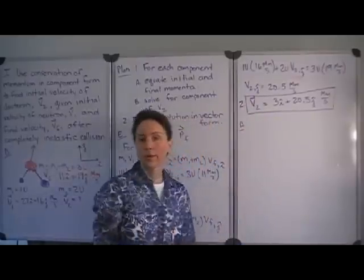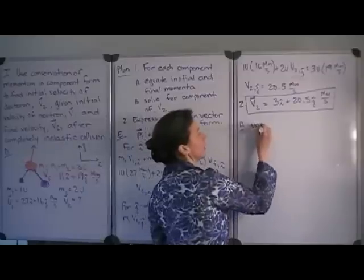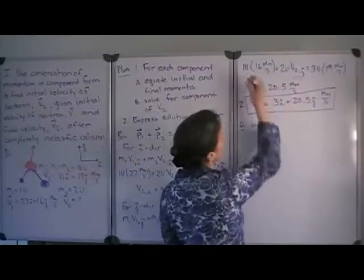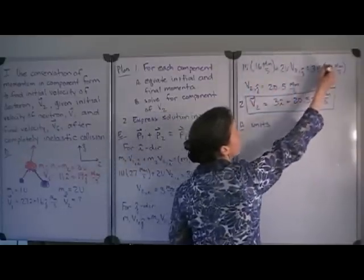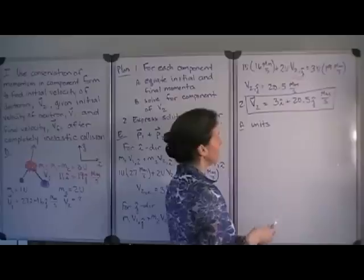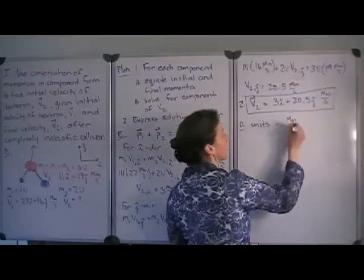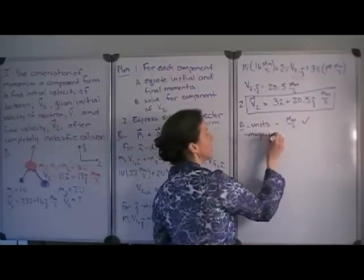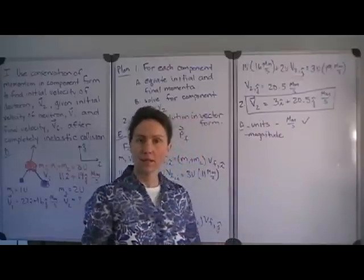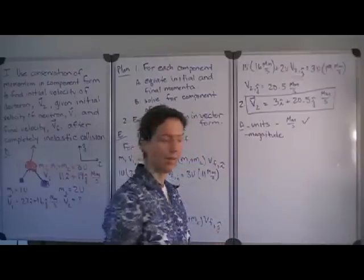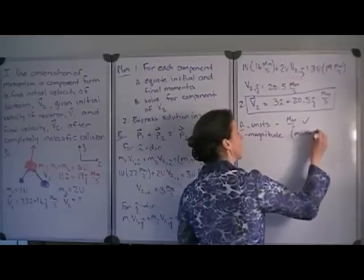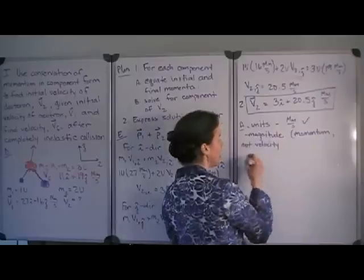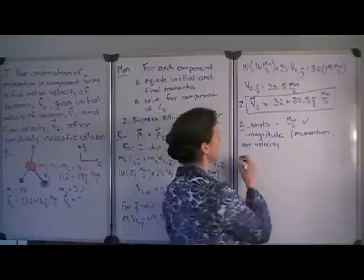How can we determine whether this answer makes sense? First, we check our units. The atomic mass units cancel out in each term, and we're left with units of megameters per second, which checks out. The magnitude is a bit more difficult to think about because it is not velocity that is conserved — it's momentum, the product of mass and velocity. The heavier particle is going to have more influence on the final outcome.